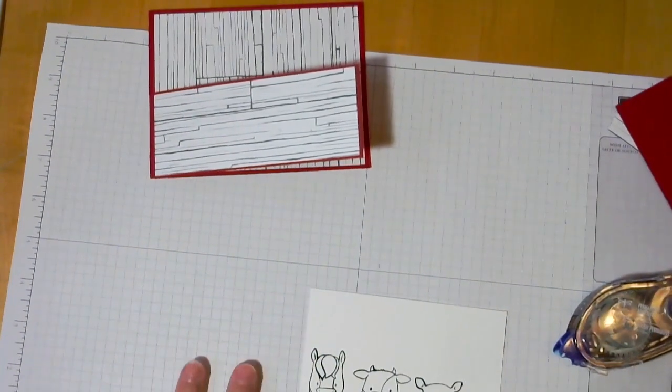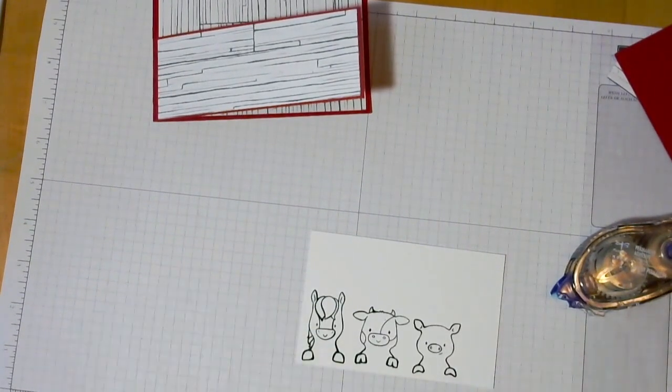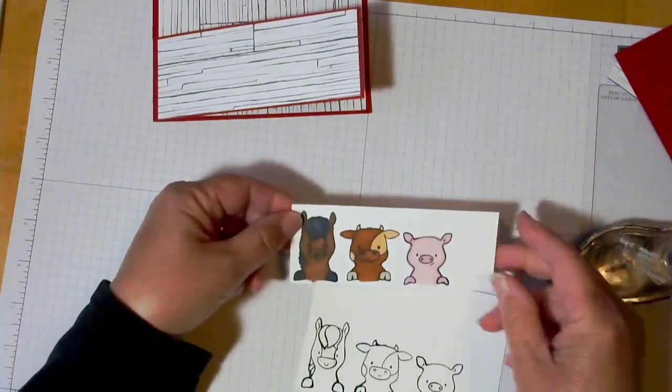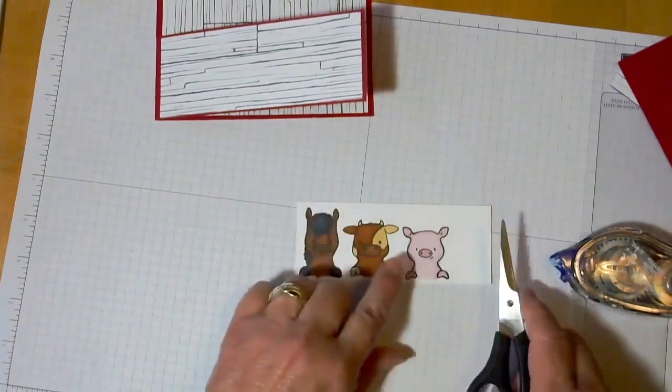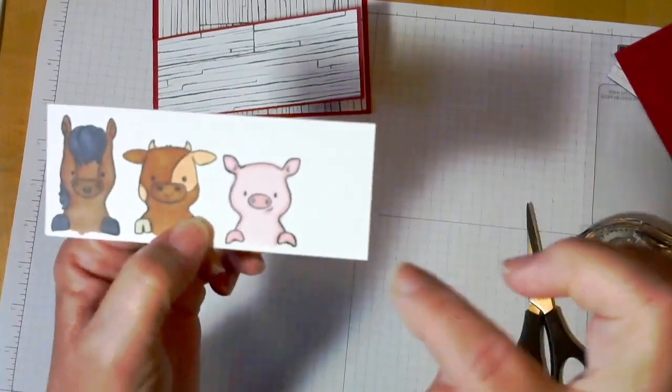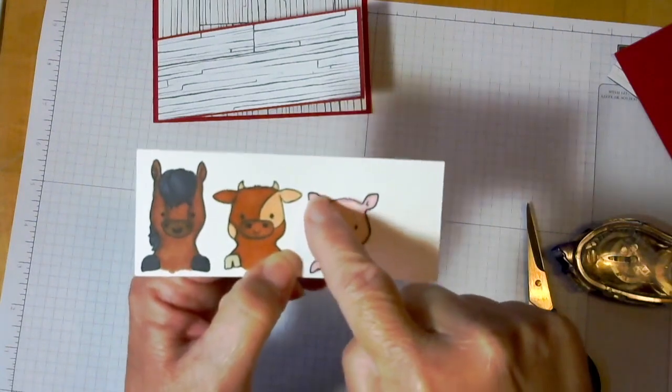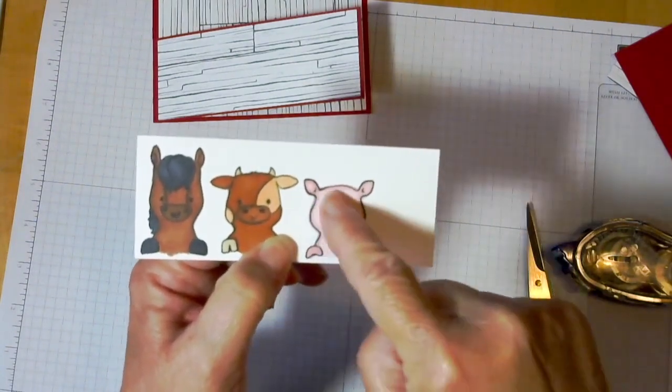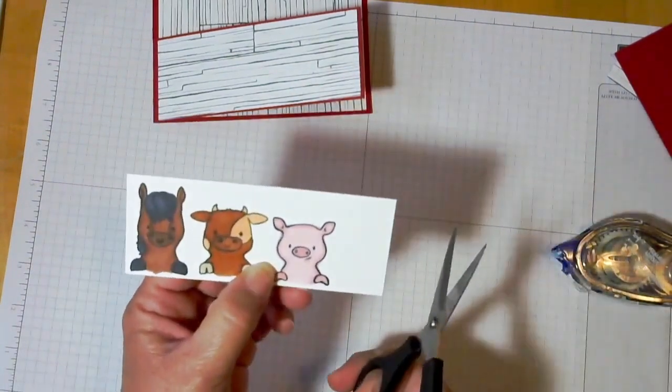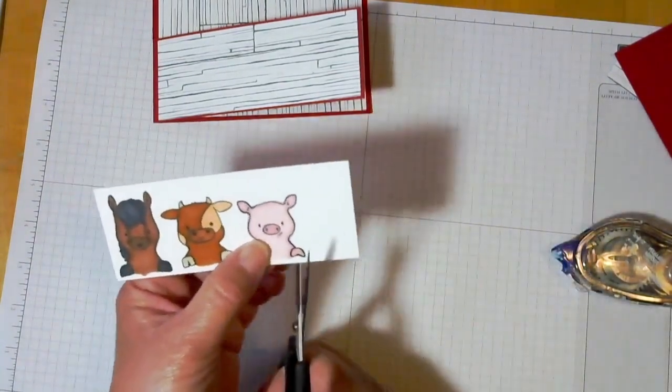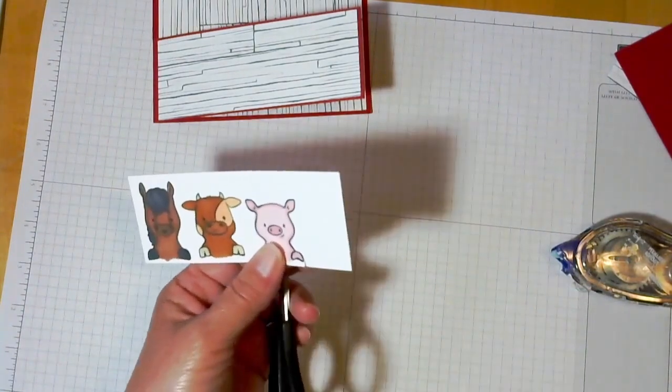And we're going to go ahead and color them in with alcohol markers or any kind of markers that you like. So I've got those colored here already. And I like to start with my alcohol markers. I color in the lightest color first on the whole thing. And then I go in and I take a darker color and outline. And then go back with the light color and blend it in. I'm sure most of you have probably worked with the alcohol markers. If you haven't, play around with a couple first. And then let me cut these out and I will come back in just a minute.